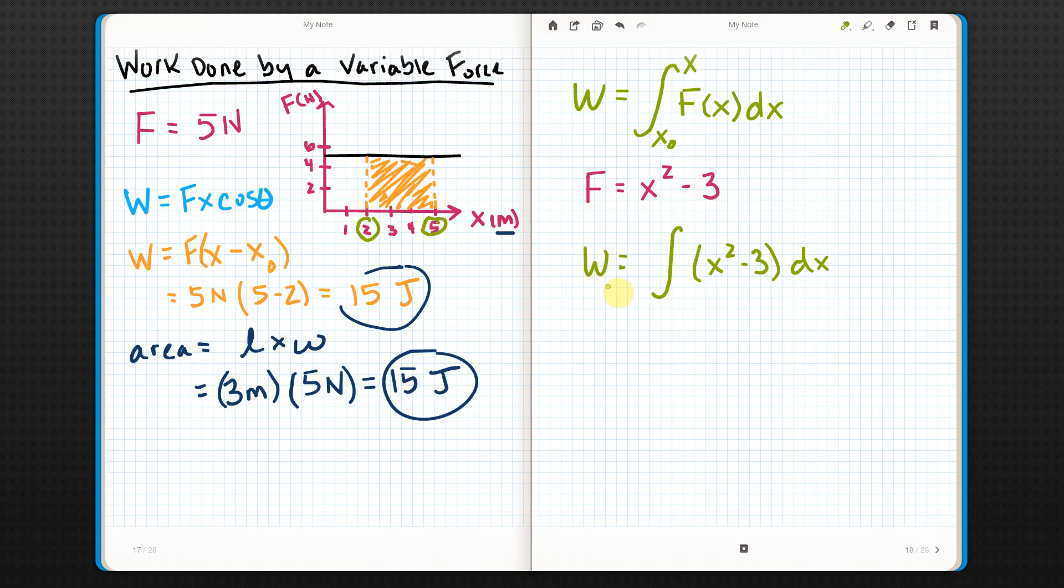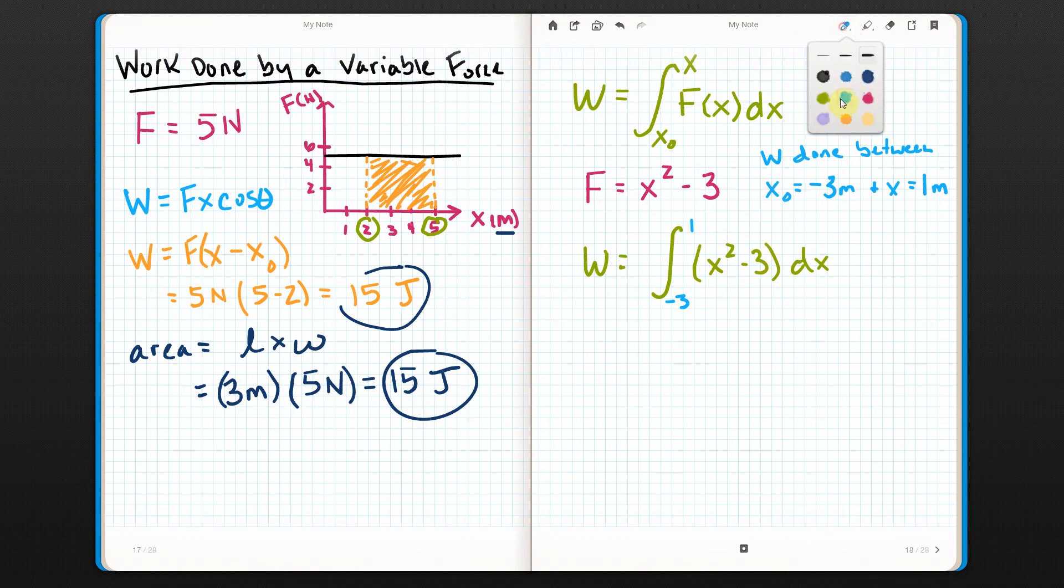So let's say I want the work done between negative 3 and positive 1. That means my limits would be negative 3 to positive 1. So then I have to do the integral. Now, it's been a while since we did any integrals. But if it's a polynomial, it's not that hard. You take the old exponent, add 1 to it. So instead of x to the second, it would be x cubed. And then you divide by the new exponent.